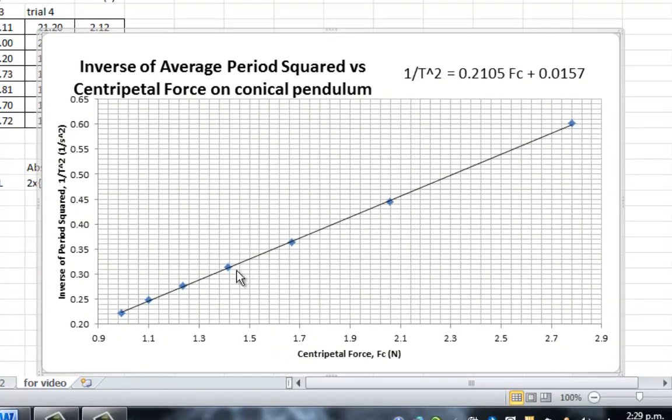But what we need to do is make error bars on this graph right here. We need to know how good these little blue dots are. How good are they left and right for centripetal force? How good are they up and down for the inverse of period squared?